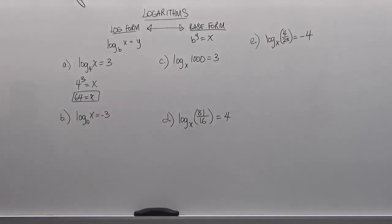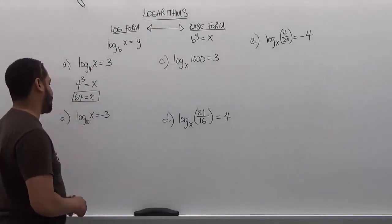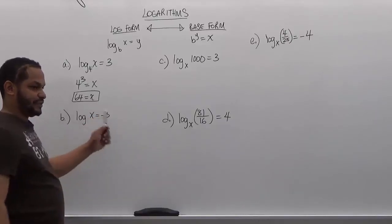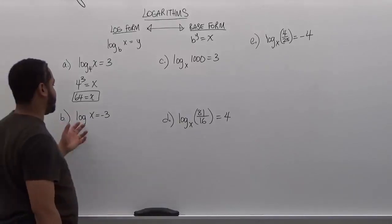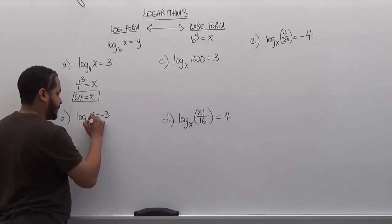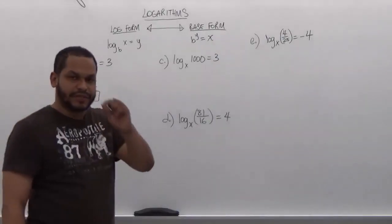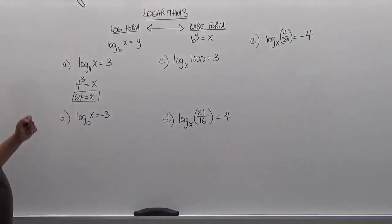Moving on to the second one we have a similar expression where we're looking for the x term. Here we have just log of x is equivalent to negative 3. The reason why there was a 10 there before was because whenever we see a log without a base, it automatically becomes 10.